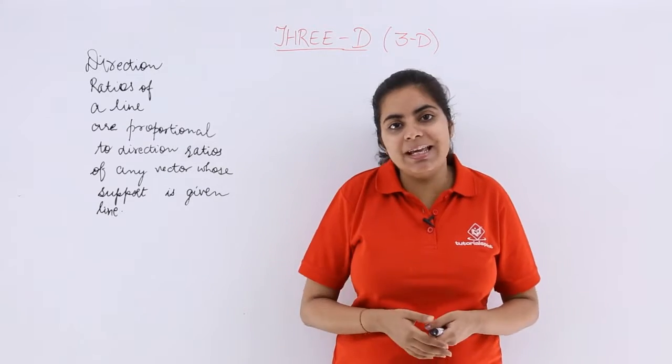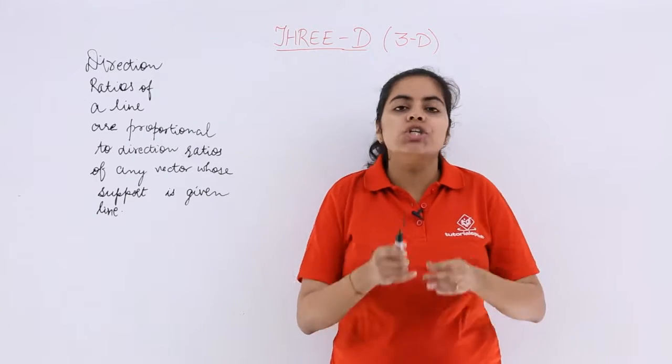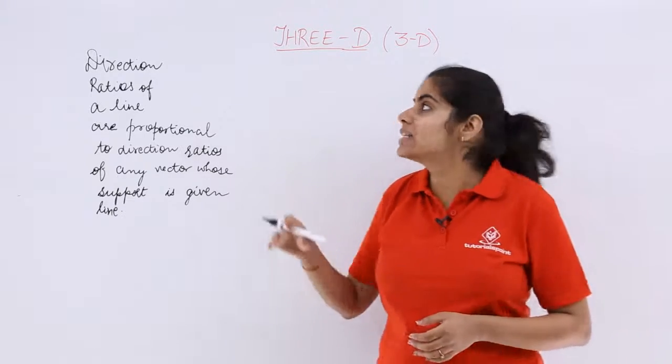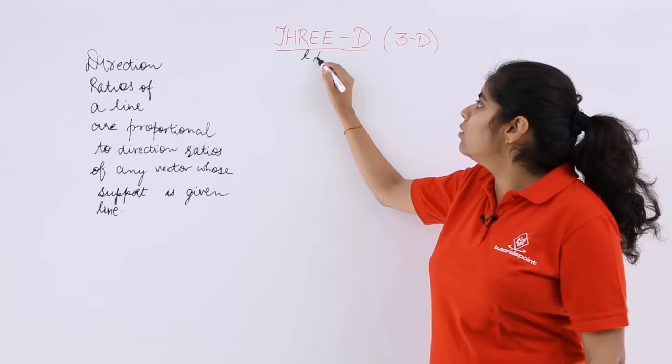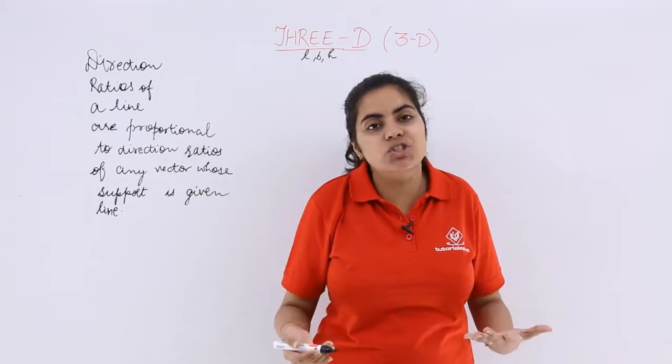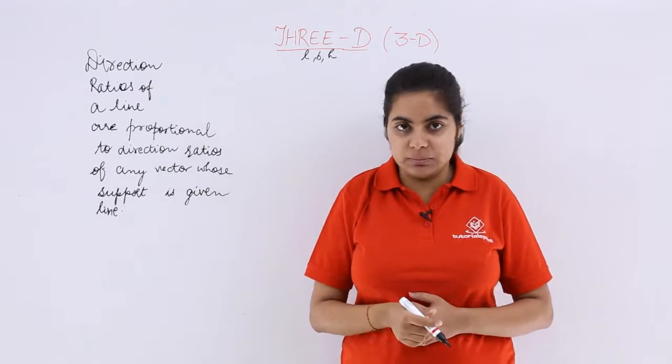Similarly if I talk about a rectangular table, even it has a height. So length, breadth, height when I talk about all those three things we talk about L, B, H means three things which talk about three dimensions. So three-dimensional geometry is the term.